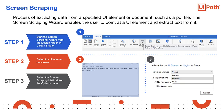Screen scraping is the process of extracting data from a specified UI element or document, such as a PDF file. Screen scraping methods are the core of all activities that enable extracting data from a specified UI element or document. In some cases, data is sent directly from the user or from one activity to another using variables or arguments. But in other cases, other methods are needed to take data out from various screens or documents. This is where screen scraping methods are used — they enable data extraction from different UI elements that the automation workflows interact with.